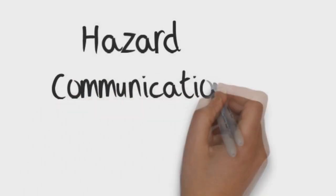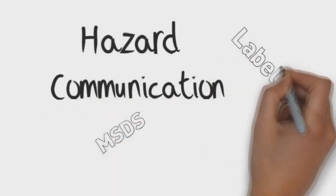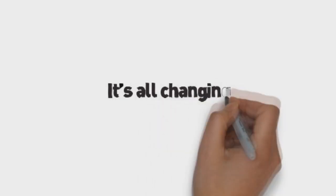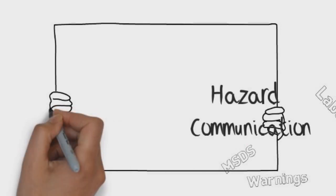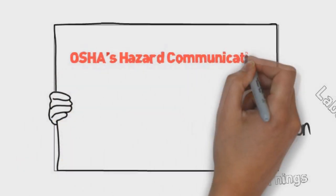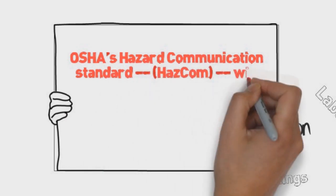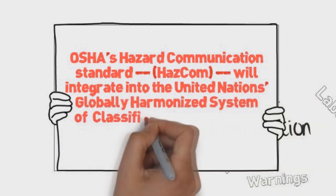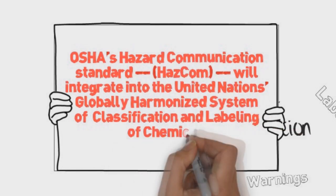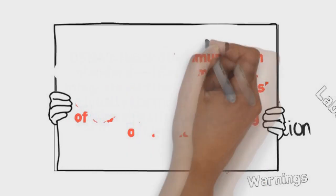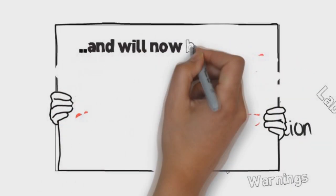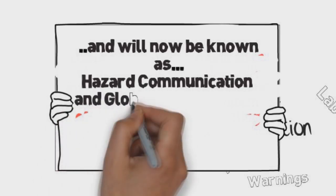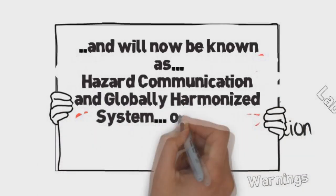Safety rules and regulations that we know under the Hazard Communication Standard are now changing, including changes in the material safety data sheets, labels, and warning requirements. OSHA's Hazard Communication Standard, known as HAZCOM, will now integrate into the United Nations Globally Harmonized System of Classification and Labeling of Chemicals. It will now be known as the Hazard Communication and Globally Harmonized System, or simply the GHS.